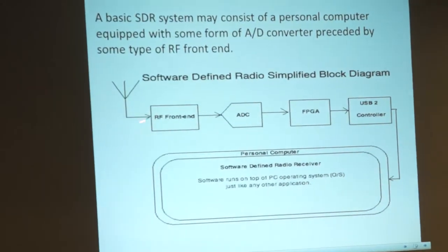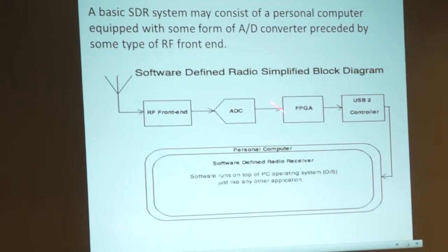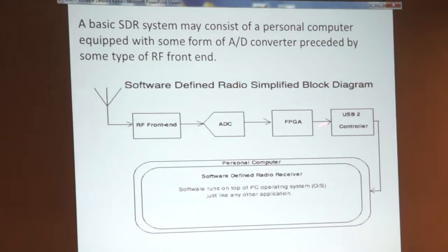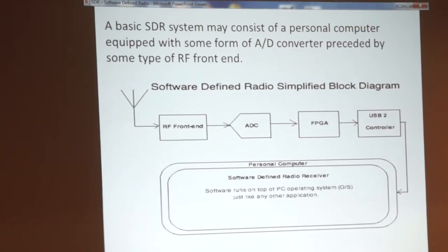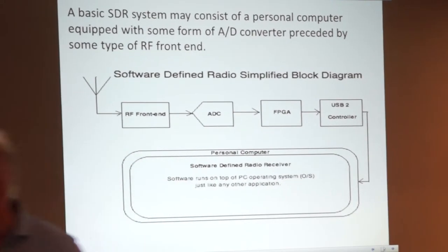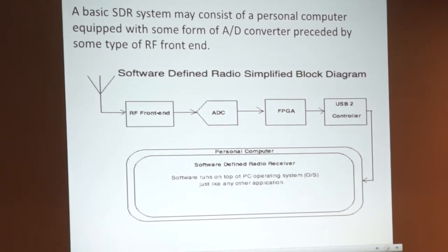In SDR you have two pieces: a software component and a hardware component. The hardware component is known as a USRP — a Universal Software Radio Peripheral. Here's a basic block diagram: antenna input comes into an RF front-end tuner, usually with a low noise amplifier (LNA). It goes through analog-to-digital conversion, and may have an FPGA — a field programmable gate array — which is a matrix of configurable logic blocks that can be configured via software to perform almost any digital function, including all your digital filtering and signal processing.